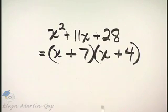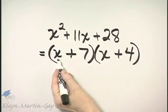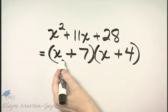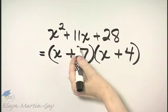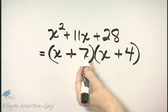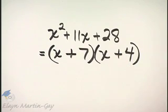And how can you check? You can check by multiplying. First times first is x squared. Then that's 4x plus 7x which is 11x. And last times last is 28. So there is my factorization.